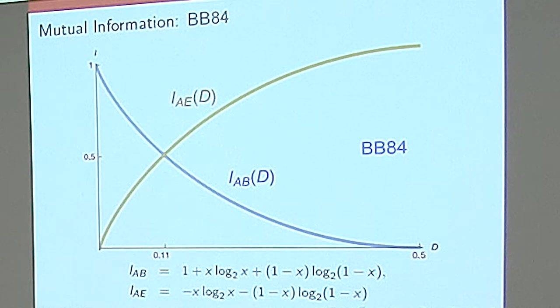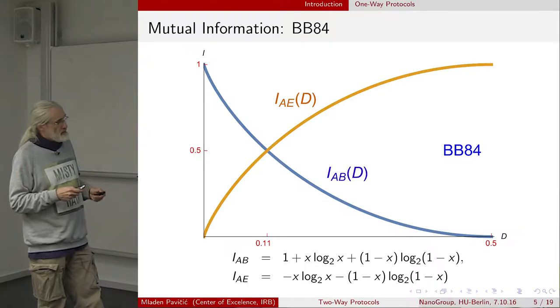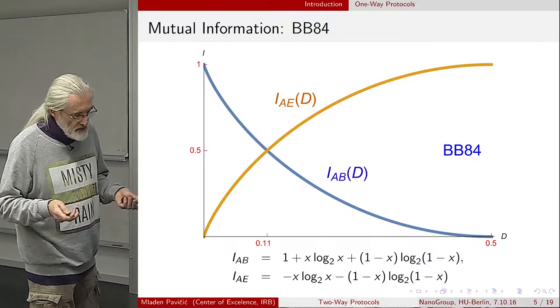And post-process the data in more effective way. The mutual information between Alice and Eve surpasses the mutual information of Alice and Bob, and at that point of 11 percent in the case of BB84, Alice and Bob just terminate the protocol.